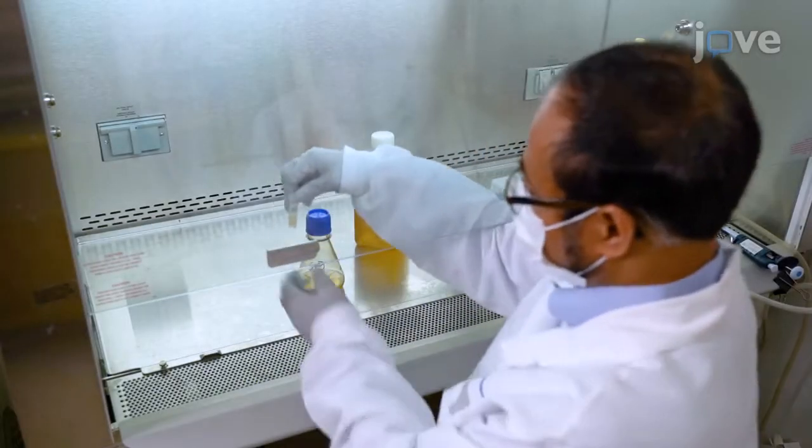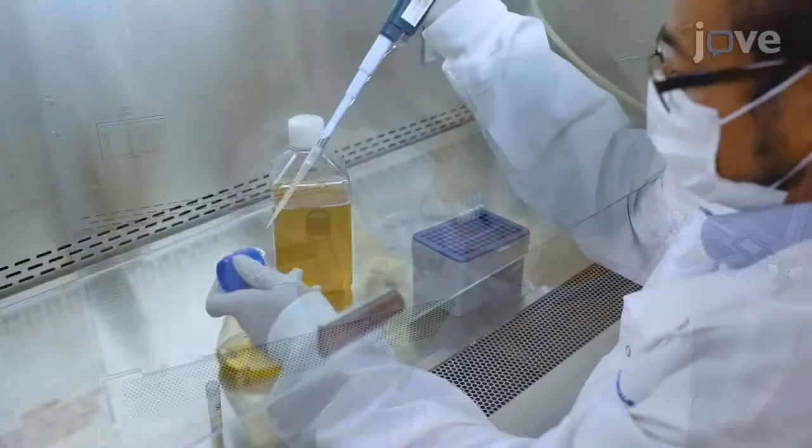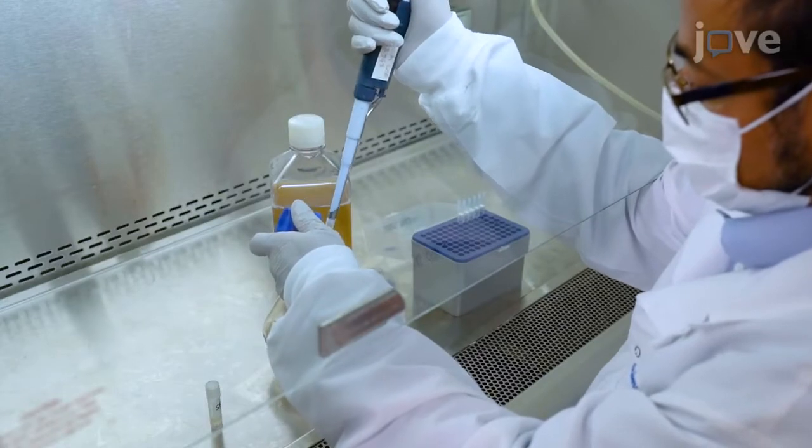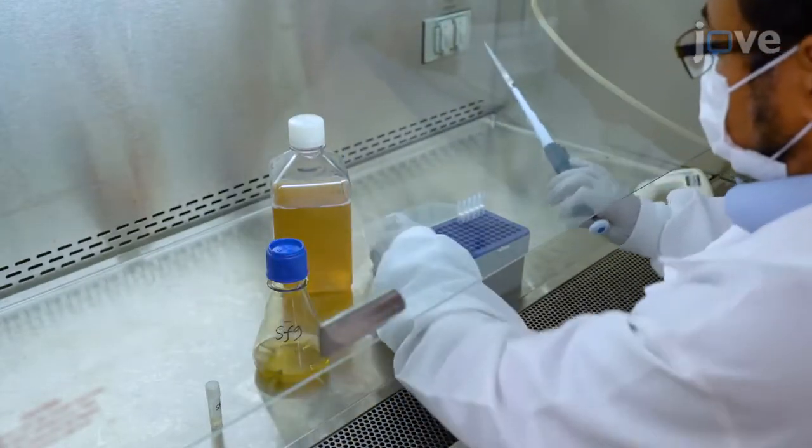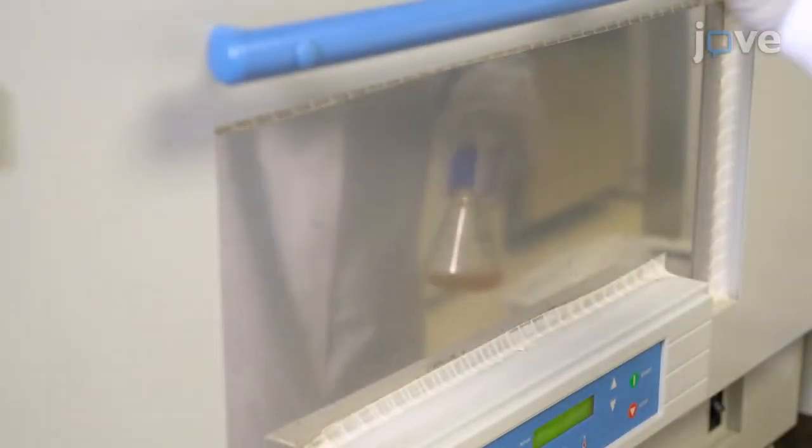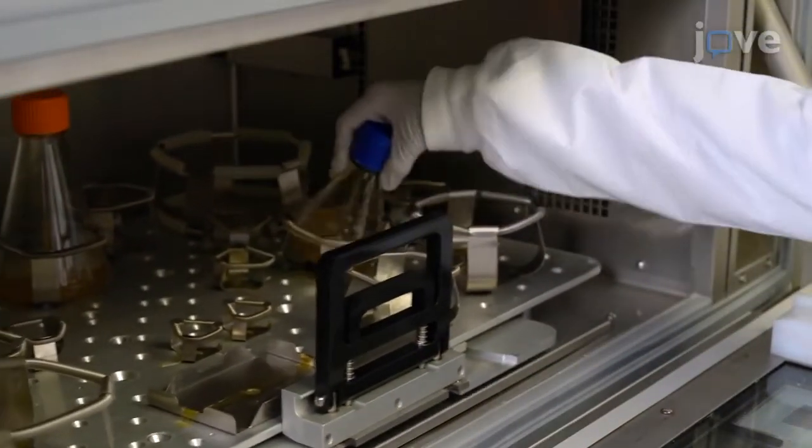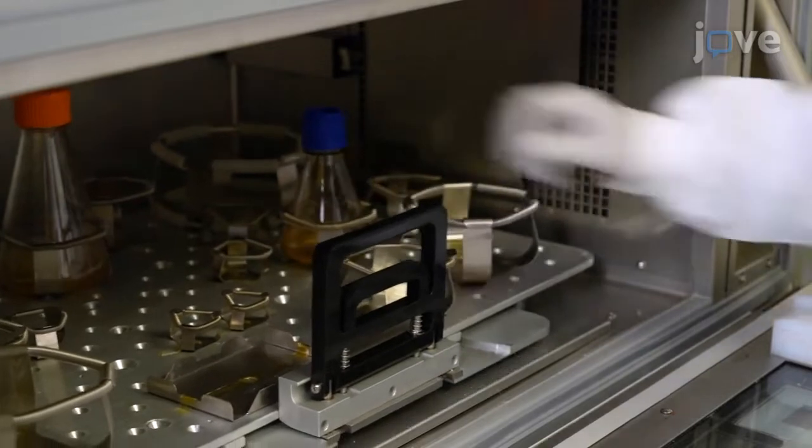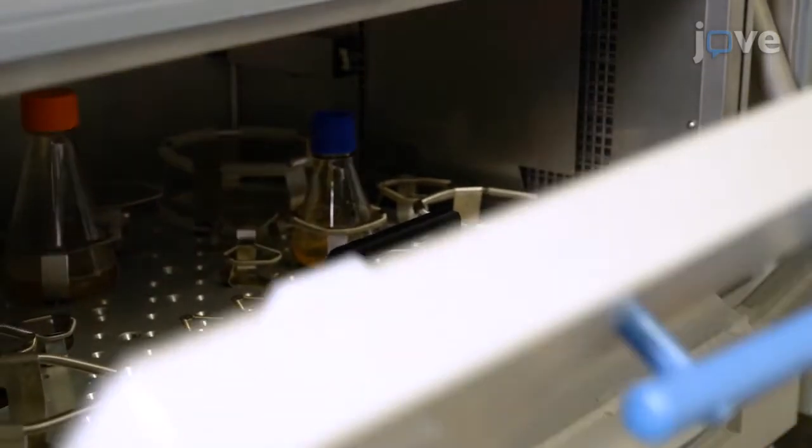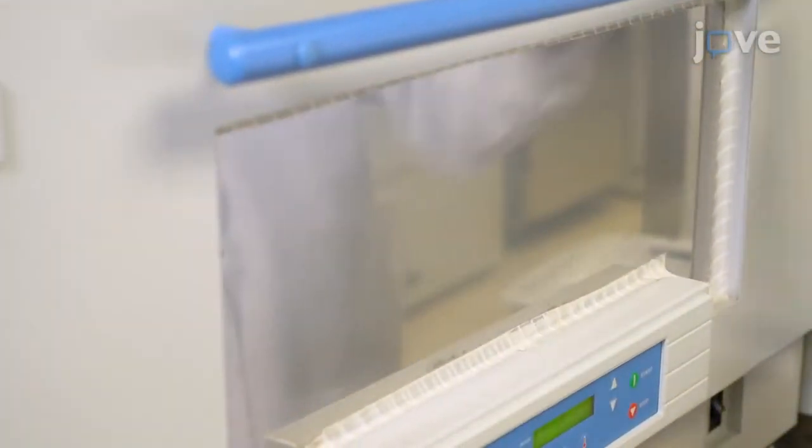Begin by thawing one vial of SF9 cells and immediately seed them in 50 milliliters of insect cell culture medium. Grow SF9 cells in an orbital shaker incubator at 125 rpm and 28 degrees Celsius in round bottom flasks with a loosely attached cap for exchange of air.